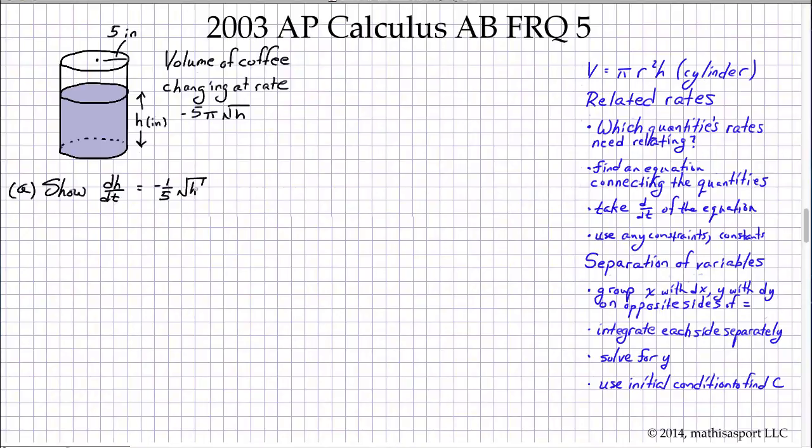So we need an equation that connects V and H. Unfortunately, that is the equation for a cylinder. So we're going to start here. We're given that V equals πr²h. Now we're going to differentiate both sides.